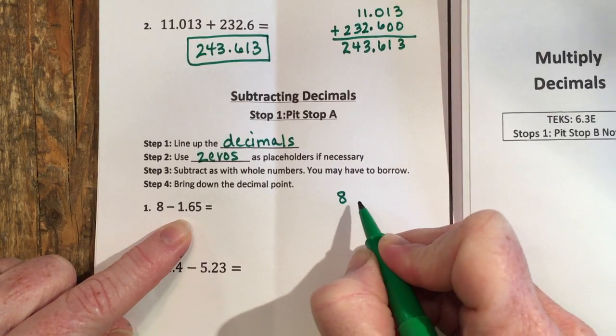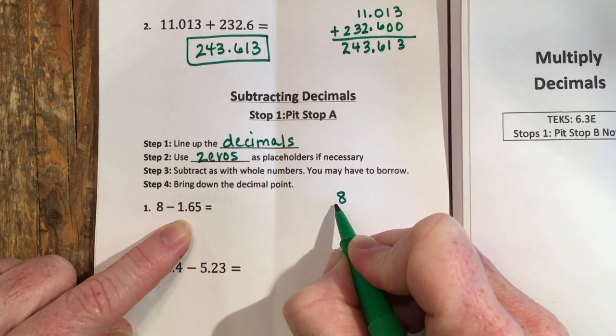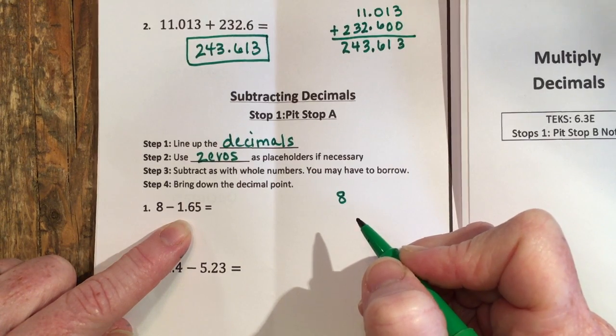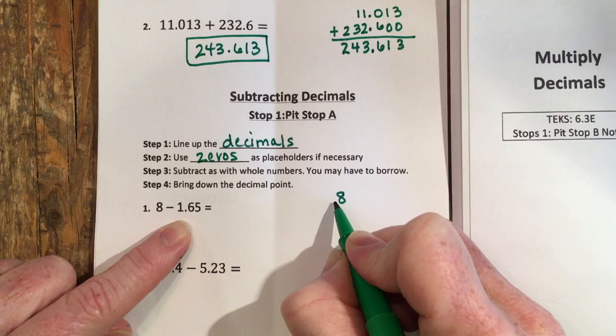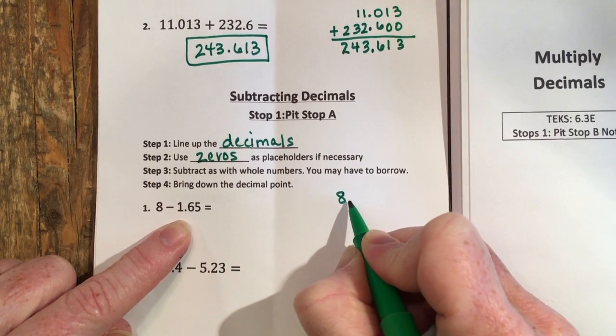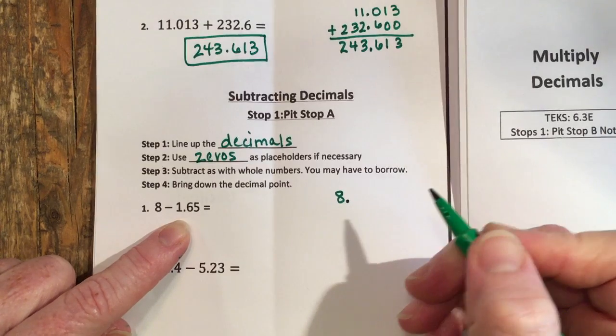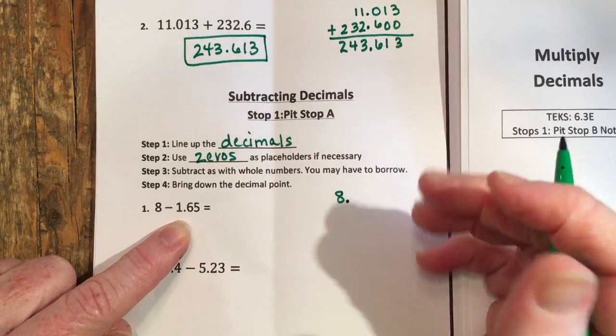If I put it in front then I've gone from 8 wholes to 8 tenths. Is that the same number? No, so it can't go in front of the 8. It must have and it has to go behind the 8, because putting it behind the 8 it's still 8 point something, it's still 8 wholes. I haven't changed it when I put the decimal behind it.